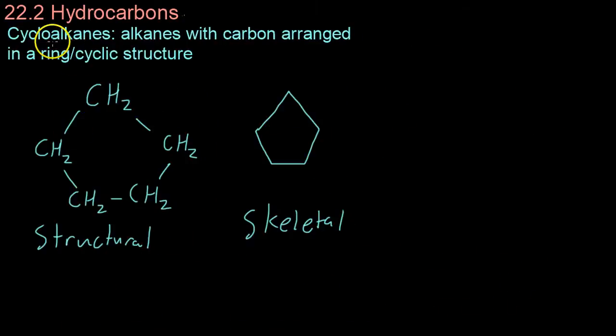Moving on now, the next type of hydrocarbon we're going to be discussing are what are known as cycloalkanes. And these are basically just alkanes with carbon arranged in a ring or cyclic structure. So, here we have what is known as cyclopentane. And just to break down that name a little bit, pent is the prefix for five. Ane means that it's an alkane.